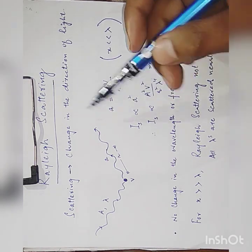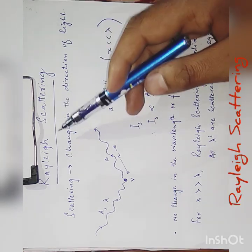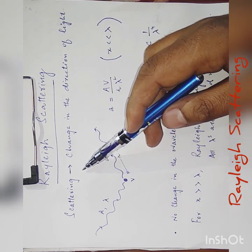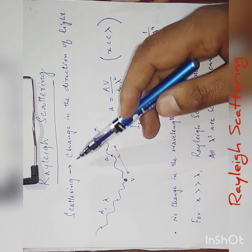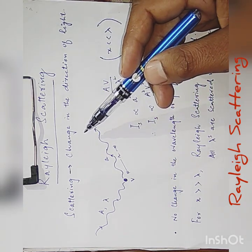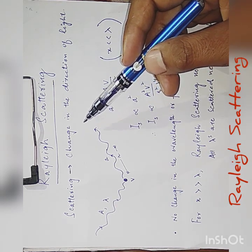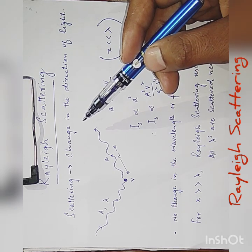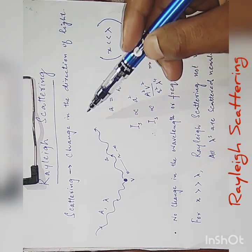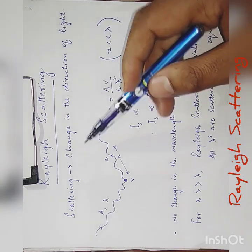Let us try to understand about Rayleigh scattering. To understand Rayleigh scattering, first we need to know what is scattering. Scattering is simply the change in the direction of light. For example, when sunlight enters our atmosphere, it gets scattered by the molecules of the atmosphere. Any change in the direction of incident light we can call as scattering of light.